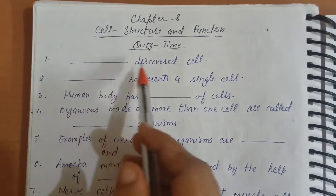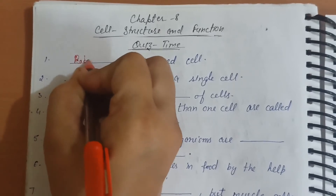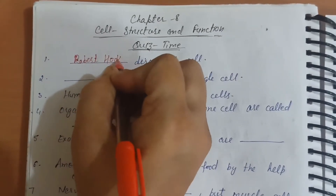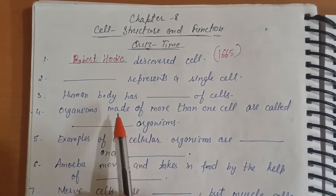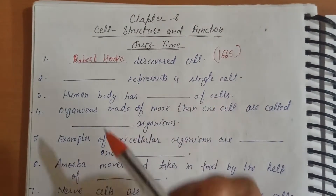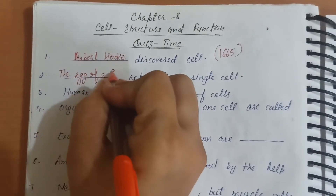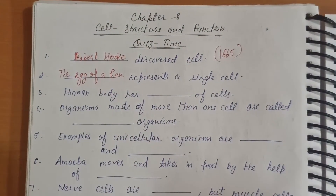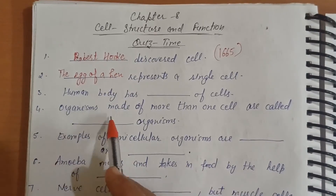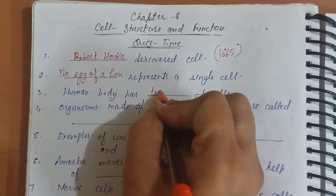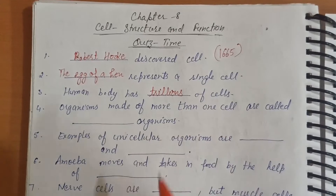Now I am starting to give answers. First, who discovered cell? Robert Hooke discovered the cell in 1665. Second, what represents a single cell? The egg of a hen. Third, the human body has trillions of cells.